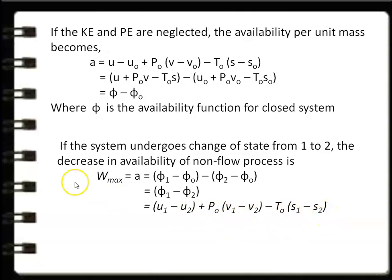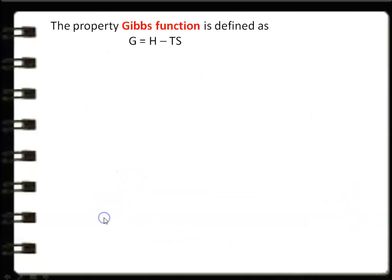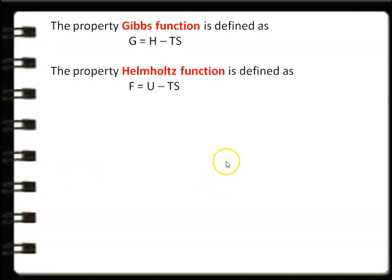This is the maximum work produced by a non-flow (closed system) process. The Gibbs function is defined as G = H − T·S, where H is enthalpy, T is temperature, and S is entropy. The Helmholtz function is defined as F = U − T·S, where U is internal energy, T is temperature, and S is entropy.